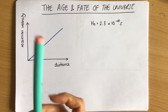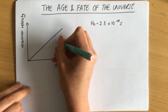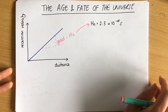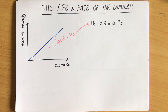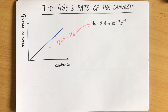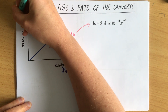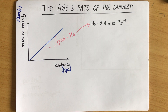If you work out the gradient of this graph you get something called the Hubble constant, which in SI units is about 2.3×10⁻¹⁸ s⁻¹. When Hubble drew his graph he used mega parsecs for distance and kilometers per second for recession velocity, so there needs to be a unit conversion to arrive at this SI value.